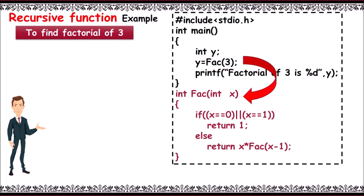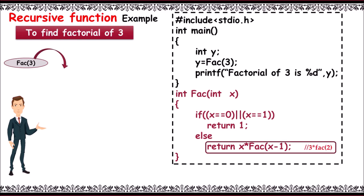Fact function is called where x is equal to 3. Now if fact of 3, as 3 not equal to 0 or 3 not equal to 1, condition fails. Else block will be executed. Here 3 into fact of 3 minus 1, this statement executes.